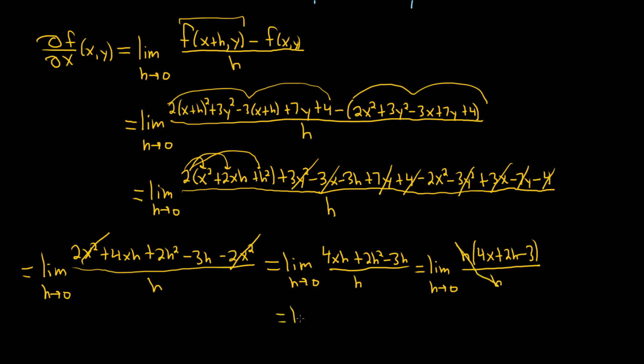So this is equal to the limit as h approaches 0 of 4x plus 2h minus 3. And so now we've finally arrived at the point where we can actually replace h with 0. So when we do that, this is when we drop the limit signs. This is equal to 4x plus 2 times 0 minus 3. So we get 4x minus 3.